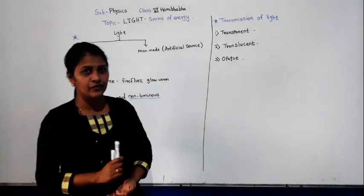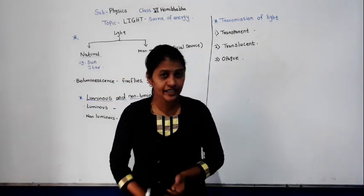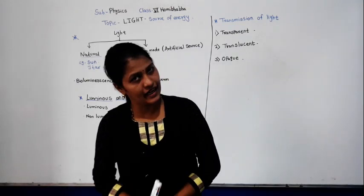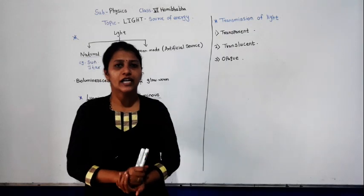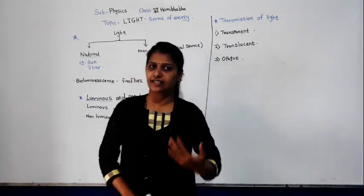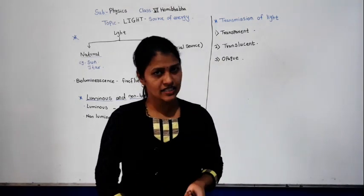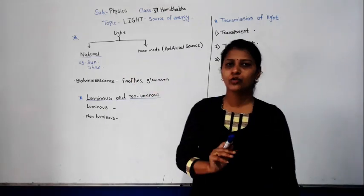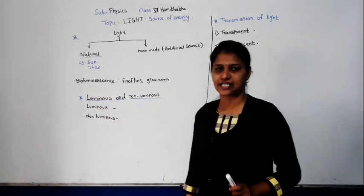At night we can see the moon, but the moon does not have its own light. It takes the light from the sun — the moon reflects the light of the sun. That process is called reflection, which I will teach in the next video. So there are mainly two natural sources of light: the sun and stars.